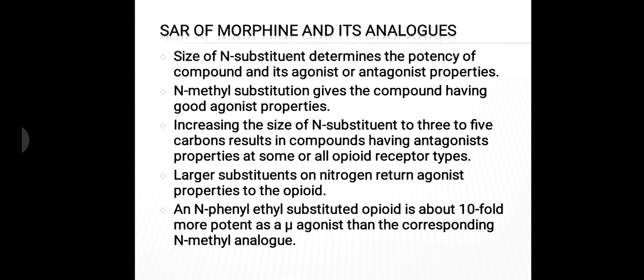If methyl substitution is present at the nitrogen atom, then the compound has good agonist properties. If we increase the size of the nitrogen substituent to 3 to 5 carbon atoms, then the compounds obtained have antagonistic properties at some or all opioid receptors. If larger substituents are present on the nitrogen atom, then activity returns to the agonist type. If a phenylethyl group is present at the nitrogen atom, then the compound is 10-fold more potent as a mu-receptor agonist than the corresponding N-methyl analog.